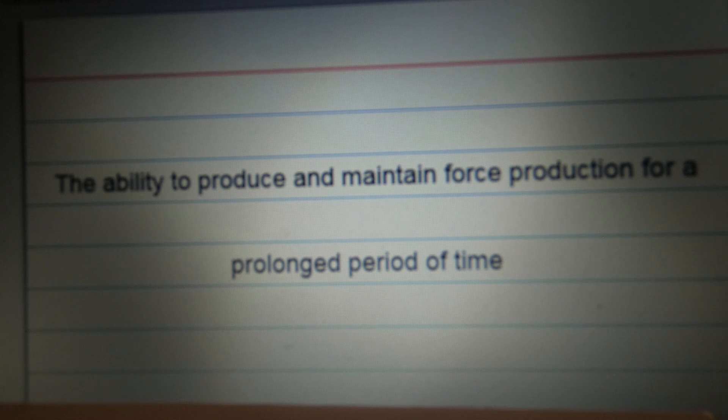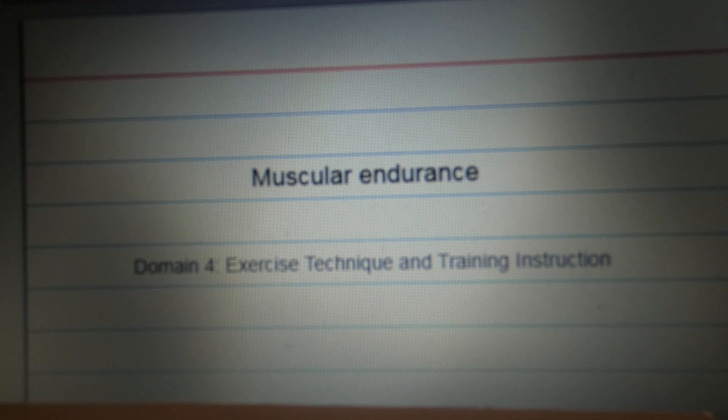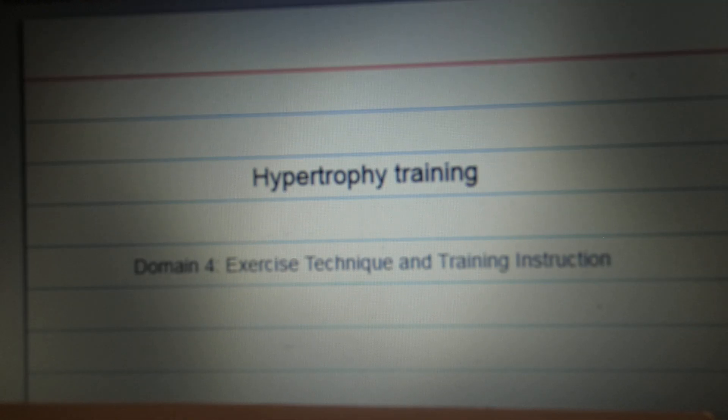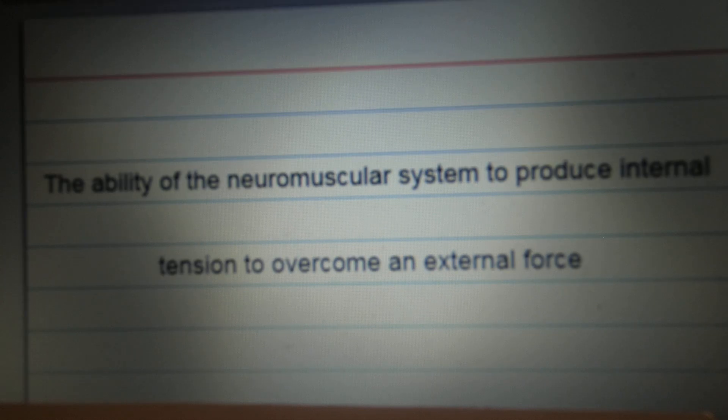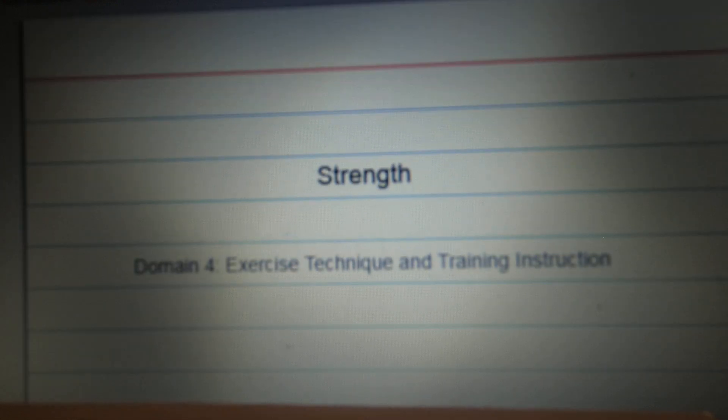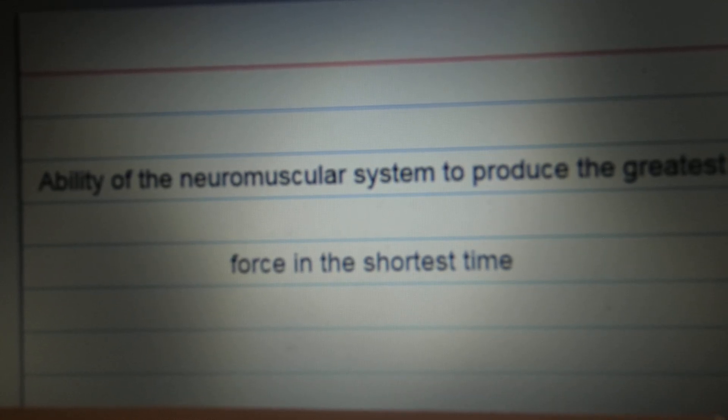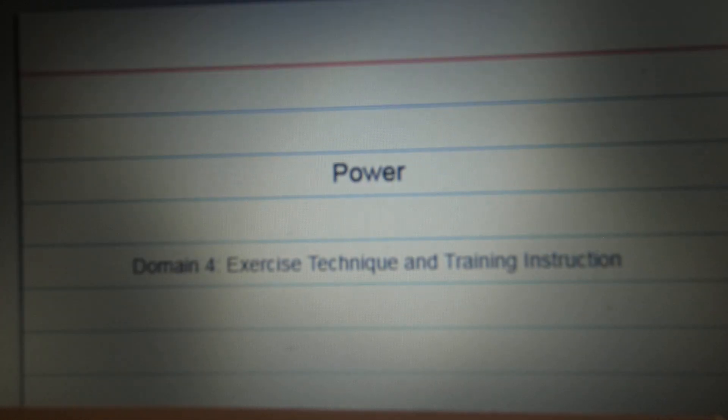The ability to produce and maintain force production for a prolonged period of time. Muscular endurance. Low intermediate repetition ranges with progressive overload that result in the enlargement of skeletal muscle fibers. The ability of the neuromuscular system to produce internal tension to overcome an external force. Strength. Ability of neuromuscular system to produce the greatest force in the shortest time. Power.